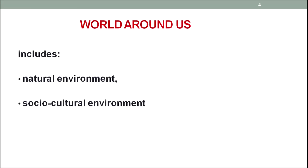You will appreciate that nothing is left beyond environment — everything around us that surrounds us is environment. The world around us is not so simple. It comprises natural environment and socio-cultural environment. The natural environment comprises biotic and abiotic components. Biotic components mean humans, animals, microorganisms. Abiotic components mean water, air, soil, rocks, mountains, etc.